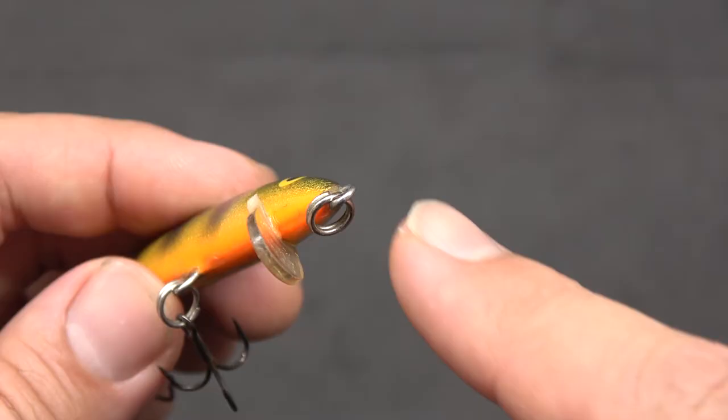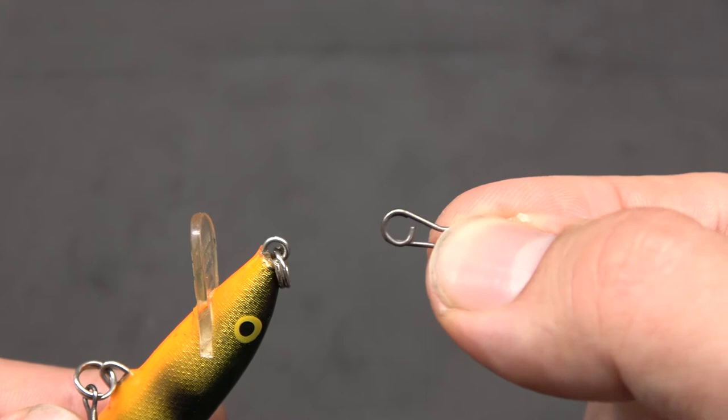If your crankbait comes with these split rings, then you can tie this directly to the rig, but if not, you're going to need one of these snap rings. This will make the action of the bait a lot more lively.